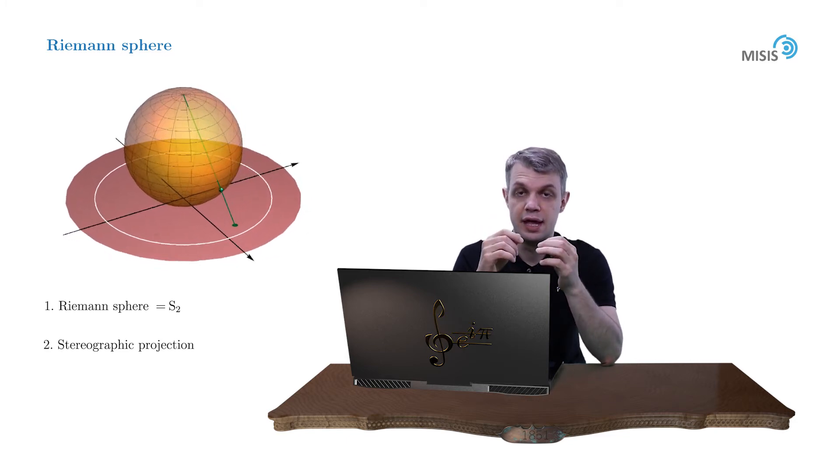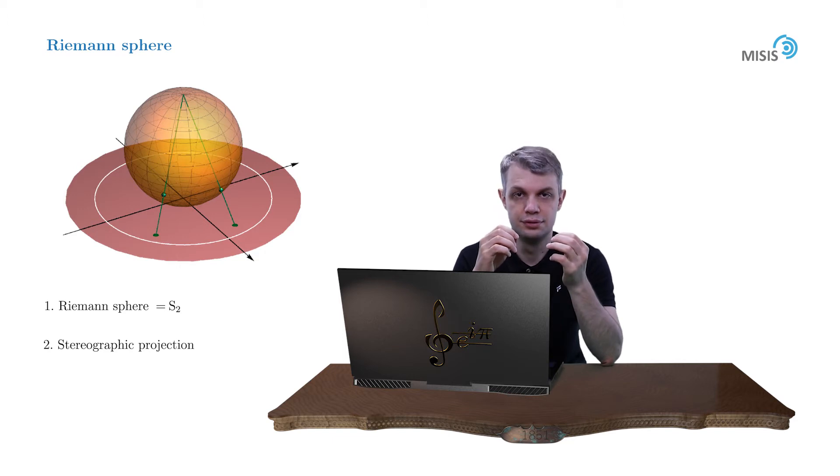Now it's obvious that every point of a complex plane has a unique projection onto a sphere. And the reverse is almost true, with the only exception of the north pole.